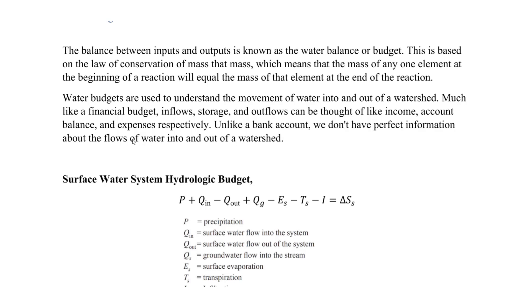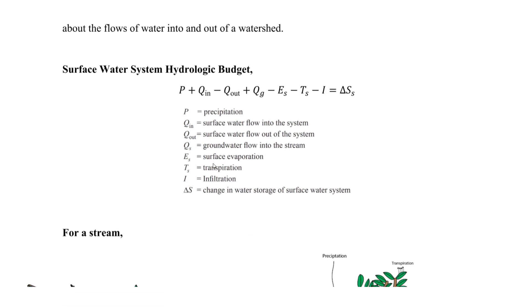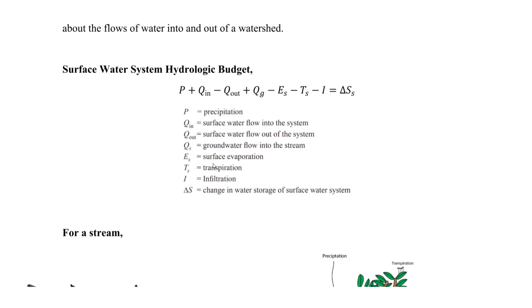The general equation provided on the FE exam — found in the reference book or in a water resources hydrology text — is the surface water hydraulic budget. The change in storage depends on all inflows (positive) and outflows (negative). Components include: precipitation (P), surface water inflow (Q_in), surface water outflow (Q_out), groundwater flow into the system (Q_g), surface evaporation (E_s), transpiration (T_s), and infiltration (I).